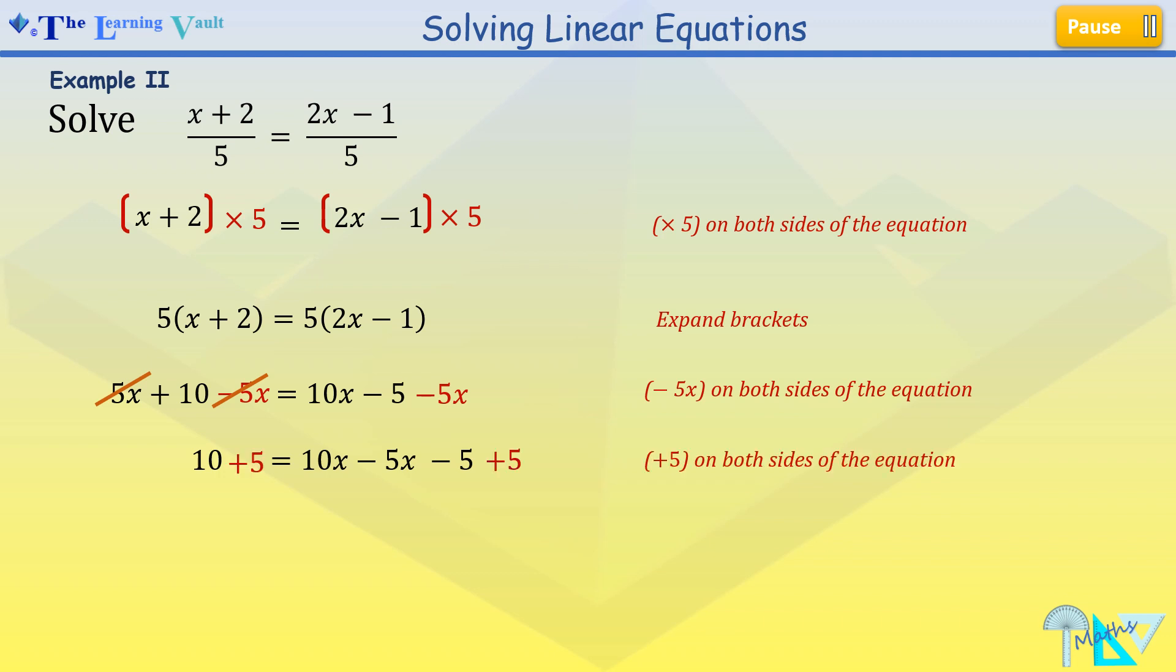So I'm going to add 5 on both sides of the equation to get rid of the negative 5 on the right hand side. And I'm left with 15 equals 5x once it's simplified. Therefore, to find my x, I'm going to divide both sides by 5 and I'll get 3 equals x, which I could just switch around and represent it as x equals 3.